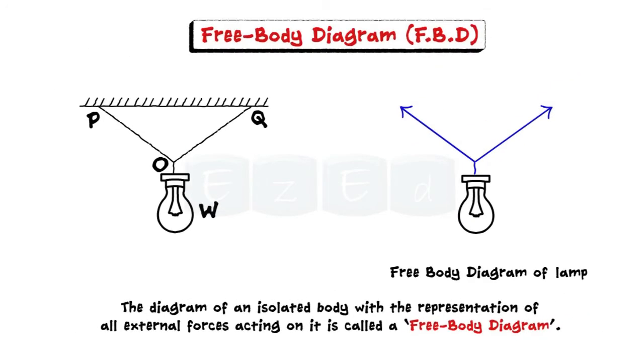The free body diagram of the lamp will show the weight W of the lamp acting vertically downwards and the tensions T OP and T OQ in the strings OP and OQ respectively.